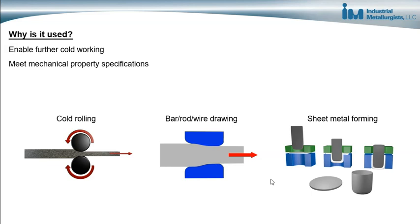Also, annealing might be used to meet mechanical property specifications for whoever will be using the material afterwards — for example, to form a component. It might also be used in between fabrication steps when manufacturing a component in multiple stages, in order to restore the ductility of the metal and enable further fabrication.